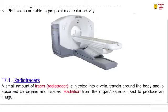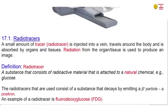The patient is laid right here on the bed and then made to get in. And so you see this is the detector which is in the form of a donut shape and the patient is going to be in the radiotracers. A small amount of tracer which is called a radiotracer is injected into a vein and travels around the body and is absorbed by organs and tissues. Radiation from organs or tissues is used to produce an image.